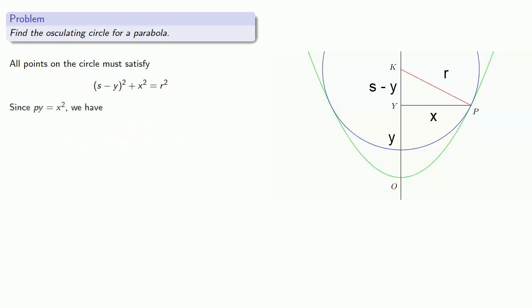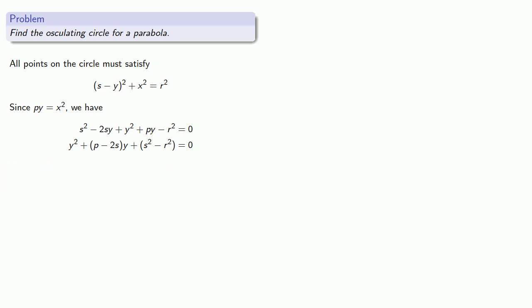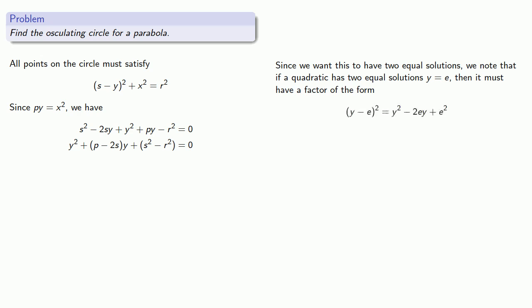Now, since py equals x squared, we have, and we can rearrange that a little. Now, this is a quadratic equation and ordinarily it would have two solutions. But, since we want this to have two equal solutions, we know that if a quadratic has two equal solutions, y equals e, then it must have a factor of the form (y minus e) squared, which we can expand. And so that means the coefficient of y must be minus 2e. And so we know that p minus 2s is minus 2e, and we can solve this for s. And so, to have two equal solutions, y equal to e, we require that s is equal to e plus p over 2.